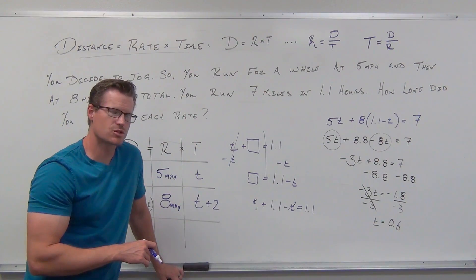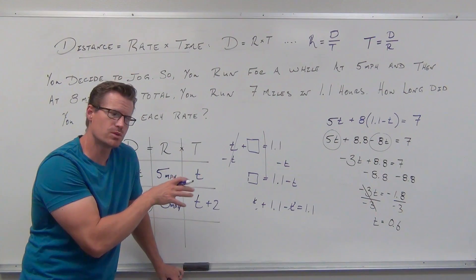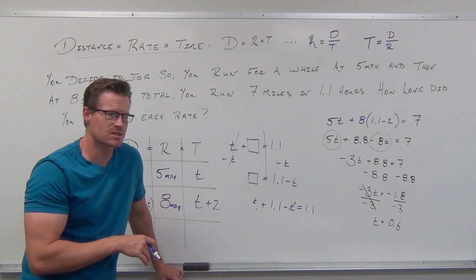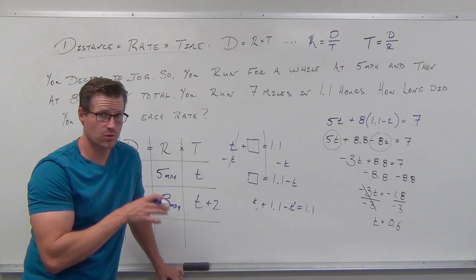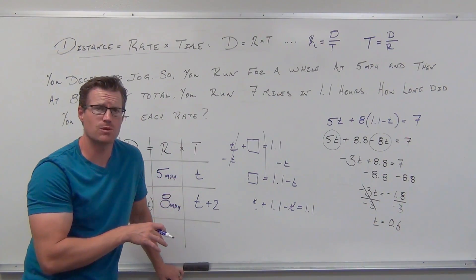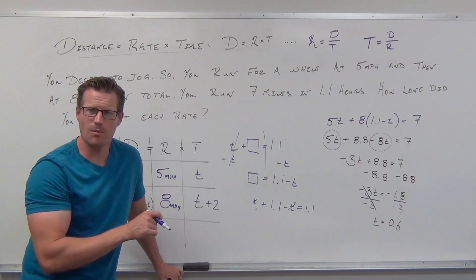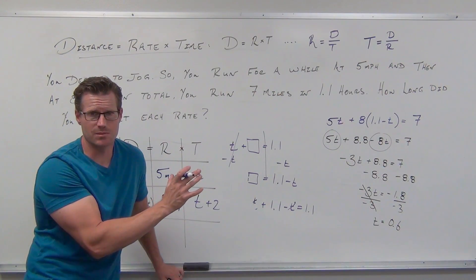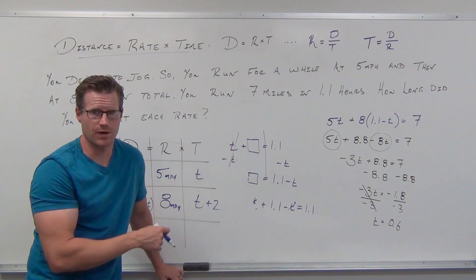Next time we're going to do mixture problems, which are really similar to this — we're going to see the same idea. Hopefully this makes sense for distance equals rate times time. Try the table, it helps a lot. Work through the original problem again before you do anything else. Make sure you get the T and subtracting it from the total to get the missing piece — the two times have to add up, and you subtract to find the missing one.